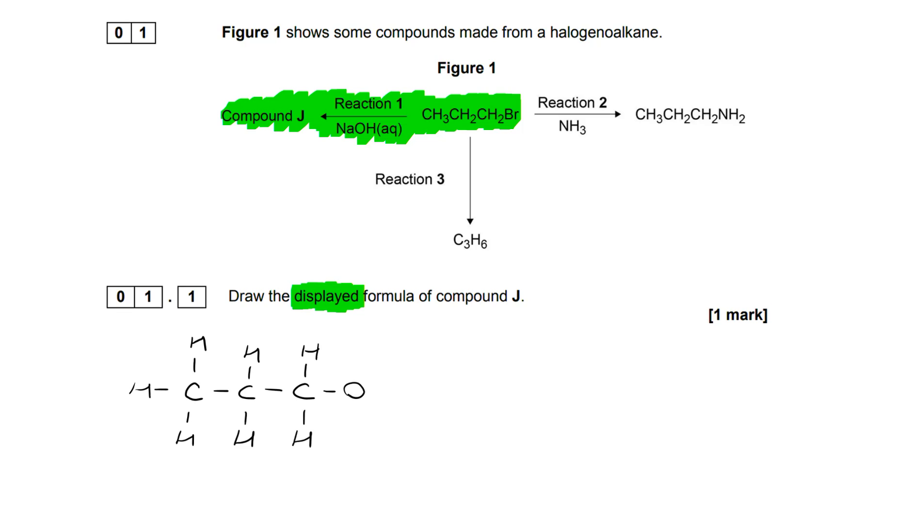You'll notice that we are drawing the displayed formula. You need to be paying close attention to that within the exam. The displayed formula has to show every single bond. So you can see here my OH has got a bond between the O and the H. It's a really common one to miss and will lose you the mark despite all of the other hard work getting you close to the right answer.